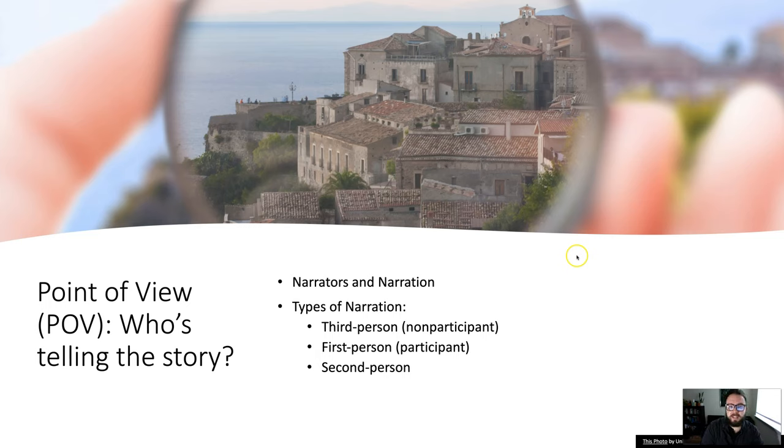First person or participant narrators are characters in the story. They are participating. They are there. A lot of times this is the protagonist, it's the main character who's telling us the story, but not always. Sometimes this could be a minor character, could be an observer or an attendant. In some kind of out-there cases, it could be like a tree or something that's telling the story of everything that's taken place beneath its branches or whatever. But it's there, it's participating.